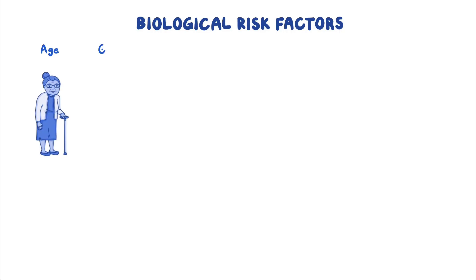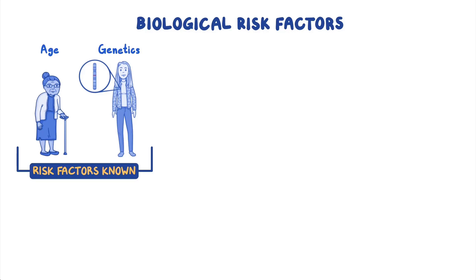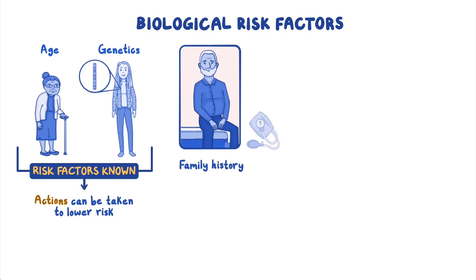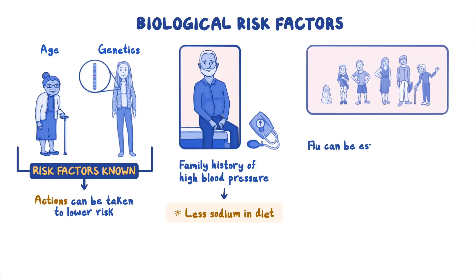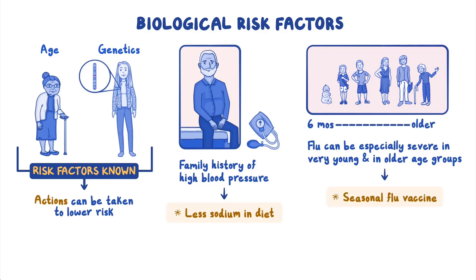Biological risk factors such as age and genetics are part of who someone is and can't be changed. However, when these risk factors are known and increase a person's risk for disease, actions can be taken to lower the risk. For example, people who have a family history of high blood pressure can try to lower their risk by eating less sodium in their diet. Their genetics may make them more susceptible to high blood pressure, but their behavior can help lower their risk. Similarly, flu can be especially severe in very young and older age groups — but all people six months of age and older can get a seasonal flu vaccine every year to help lower their risk.